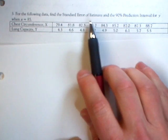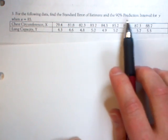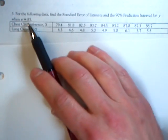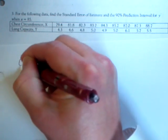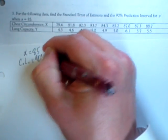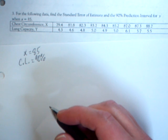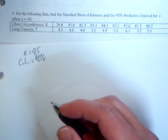Okay, so when it says for the following data, find the standard error of estimate and the 90% prediction interval for Y when X equals 85, we can write down X equals 85, we can write down the confidence level is 90%, and then we can begin our steps.